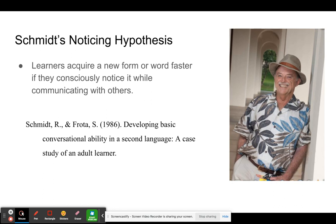Another theory of SLA that followed Krashen was Richard Schmidt's noticing hypothesis. This one goes against Krashen because it focuses on conscious learning — proposing that learning is very conscious, deliberate, and takes attention. Schmidt argues that learners learn a new word or grammar form faster if they notice it consciously while communicating with others.